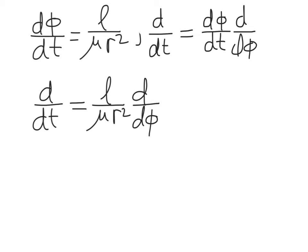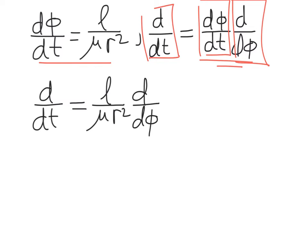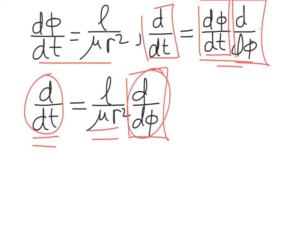Conservation of angular momentum means d phi by dt is L over mu r squared. This means we can recast any time derivative: anywhere we see a time derivative, we can replace it with d phi by dt times d by d phi. So a time derivative can be rewritten as L over mu r squared times d by d phi. We'll replace all time derivatives with phi derivatives in our dynamical equation to get a nice relationship in r and phi that we can solve exactly.